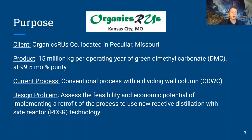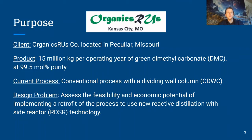Our client is Organics R Us, located in Peculiar, Missouri, that currently produces 15 million kilograms per operating year of green dimethyl carbonate at 99.5 mole percent purity. The conventional process uses a dividing wall column referred to as a CDWC. The retrofit would remove this and use reactive distillation with a side reactor, known as RDSR. Therefore, they have asked us to assess the feasibility and economic potential of implementing the retrofit to produce the same amount and purity of DMC.